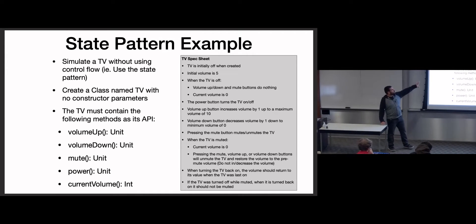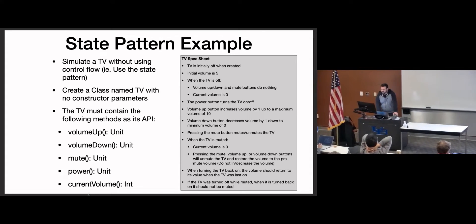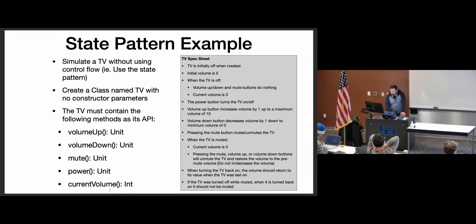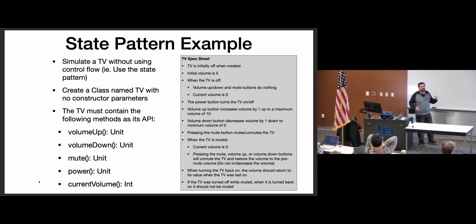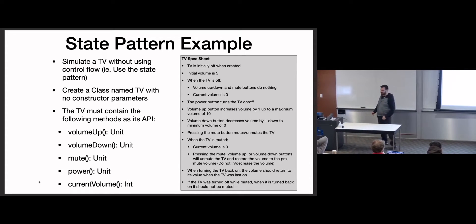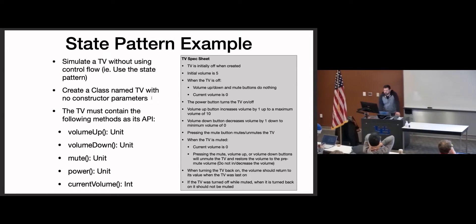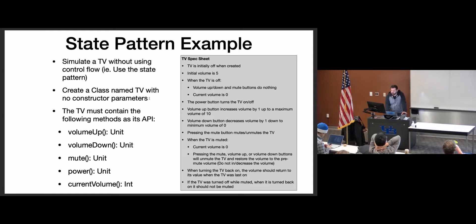So this is what we want to do. We have this API — these four buttons — and current volume, which we can call to verify the volume is what we expect. This is a no-conditionals assignment requiring the state pattern. What is this TV supposed to do?